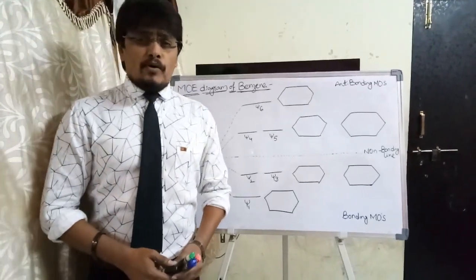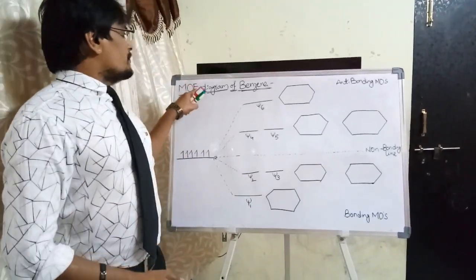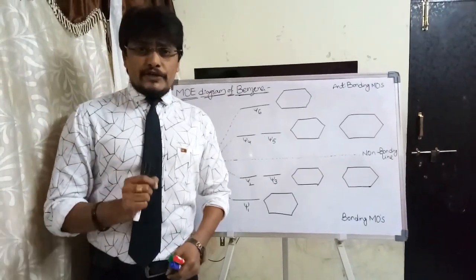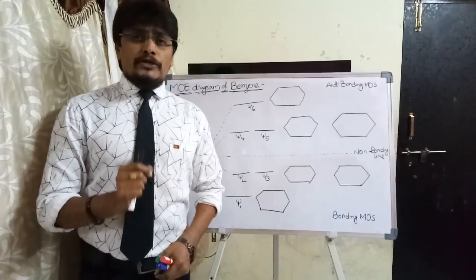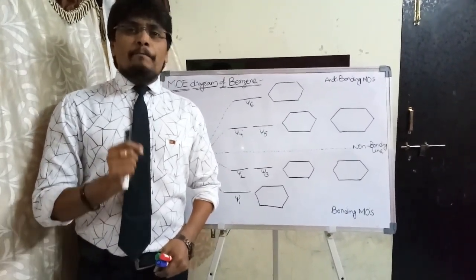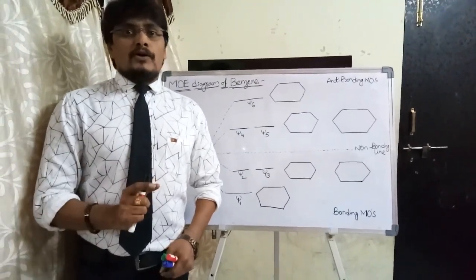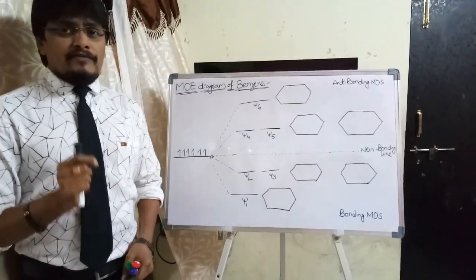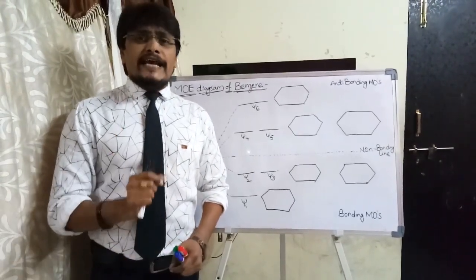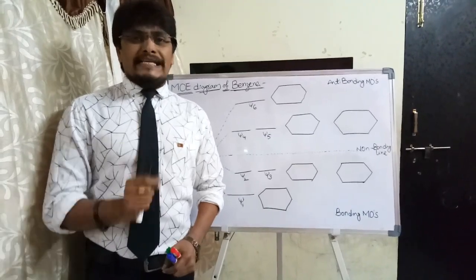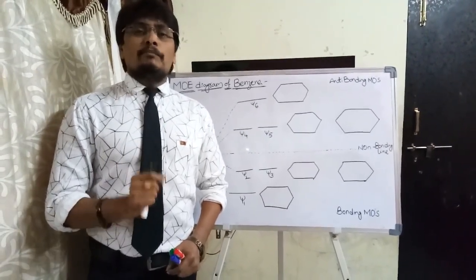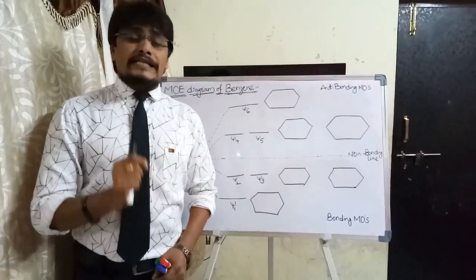In this video I am going to explain the molecular orbital energy diagram of the benzene molecule. This particular video is the extension of molecular orbital theory of benzene which I have explained in Part 1 of MOT of benzene. So before watching this video, please do watch that video, where I clearly explained the basics required to draw the molecular orbital energy diagram of benzene.